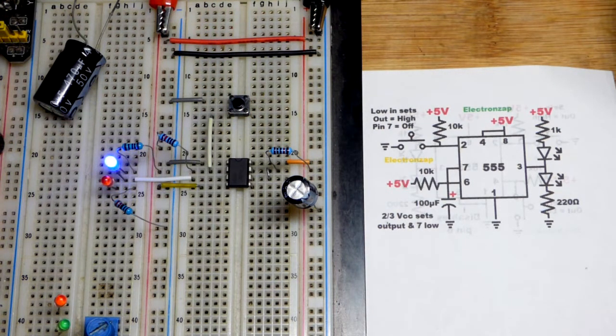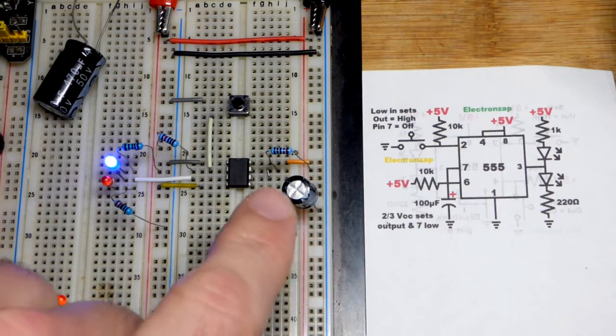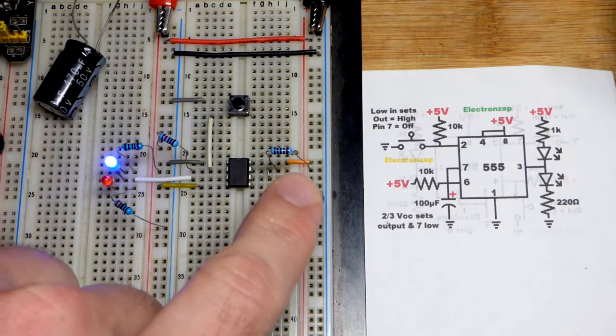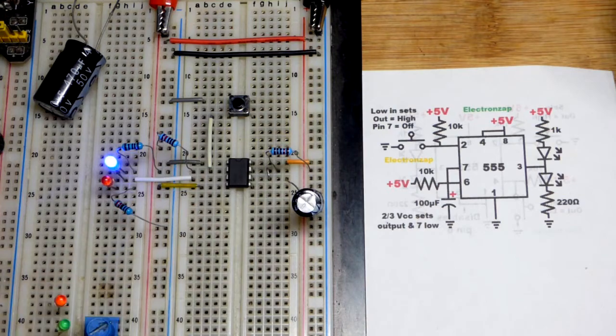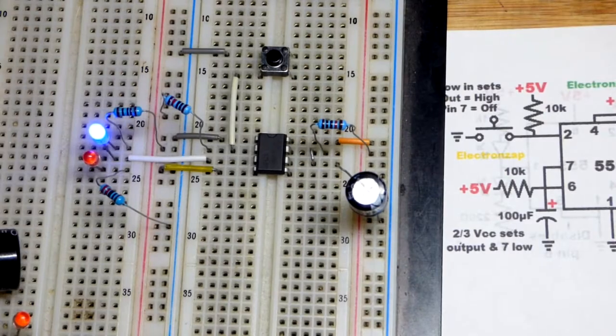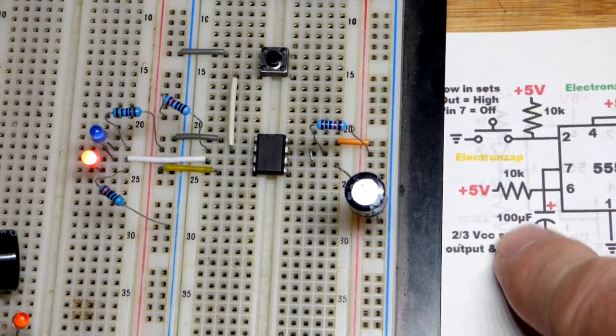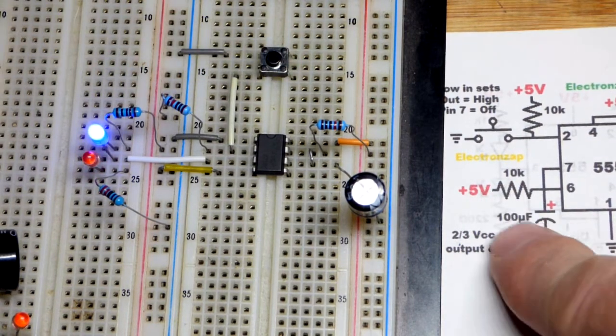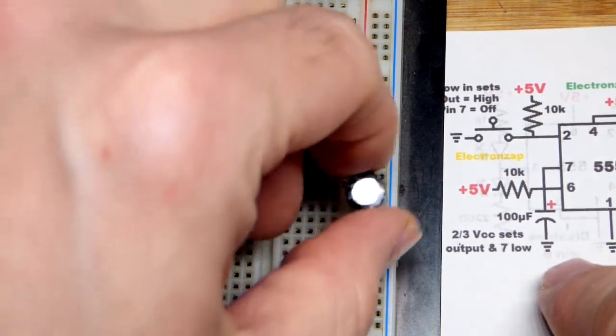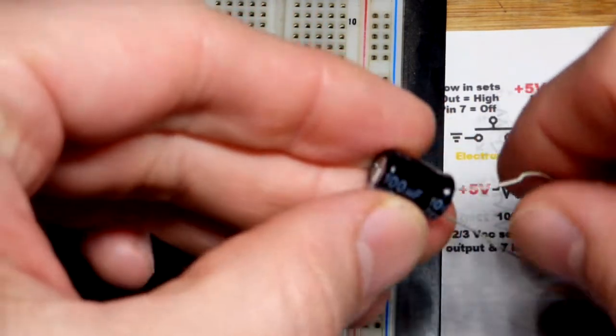The amount of time that it stays high depends on the value of the capacitor and the timing resistor. To get the timing somewhat close to one second, I use a 10,000 ohm resistor and a 100 microfarad capacitor right here.